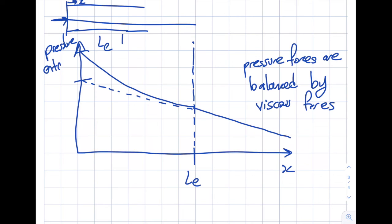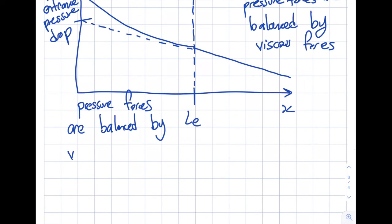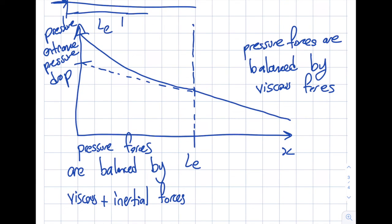This is called entrance pressure drop. The reason for this is in this regime the pressure forces are balanced by two things, not one. In the fully developed it's the viscous forces, and over here I still have the viscous forces, you know I have an inviscid core and a viscous region, but also I have inertial forces as well. What I mean by inertial forces is acceleration forces, so because the flow in some regions is accelerating, in some regions is decelerating, so that accounts for this extra behavior.